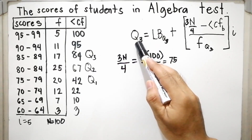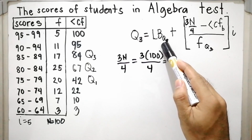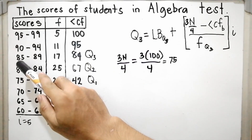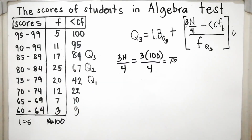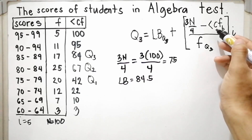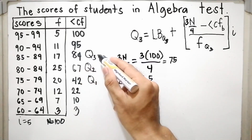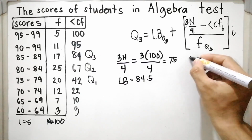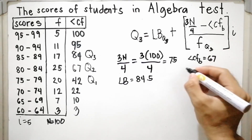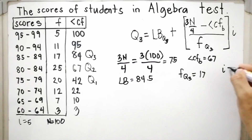To calculate Q sub 3 we need all remaining formula values. The lower class boundary of the Q3 class: the lower score is 85, so LB equals 85 minus 0.5, which is 84.5. The less than cumulative frequency below the Q3 class is 67 (the CF of Q3 is 84, and below it is 67). The frequency of the Q3 class is 17, and I equals 5.